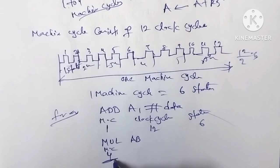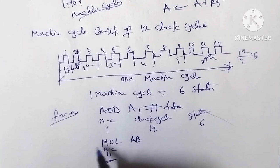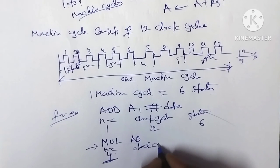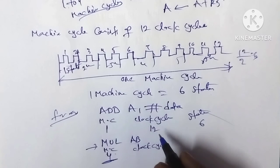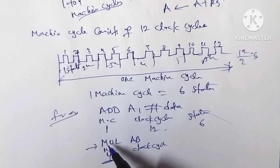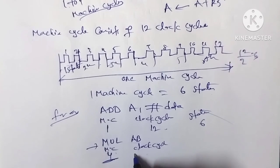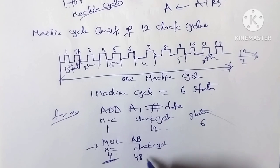For an instruction that uses 4 machine cycles: 4 machine cycles × 12 clock cycles = 48 clock cycles total.